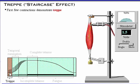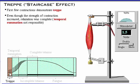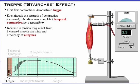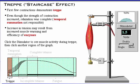The first few contractions demonstrate TREP, or the staircase effect. Look closely to see that even though the strength of contraction increased, relaxation was complete. This shows that temporal summation was not responsible for this effect. The increase in tension may result from increased muscle warming and efficiency of enzymes. Click the stimulator to see muscle activity during TREP, then click another region of the graph.